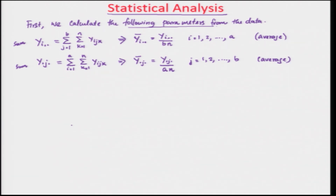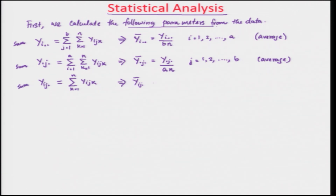The third parameter is y_ij., where i and j remain the same and k varies. This equals the summation of k from 1 to n of y_ijk. From here we calculate y_ij. bar, the average, which is y_ij. divided by n, for all i equals 1 to a and j equals 1 to b.